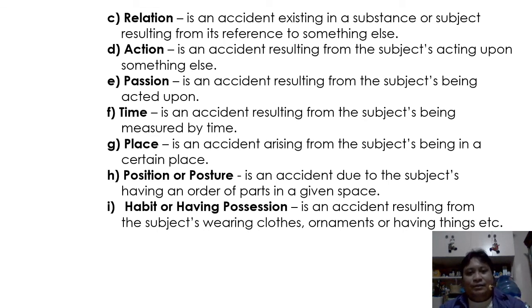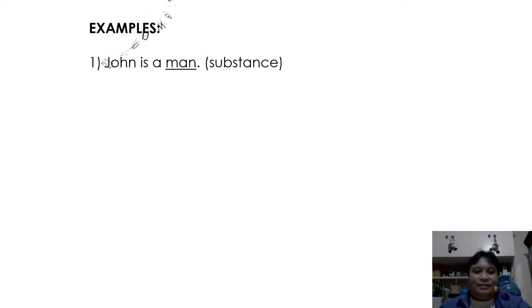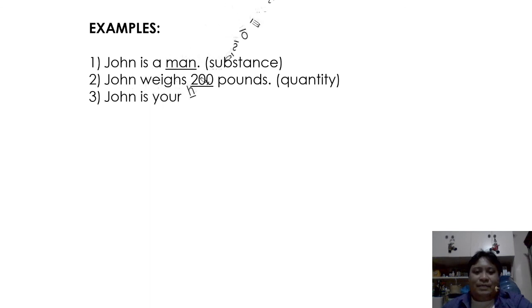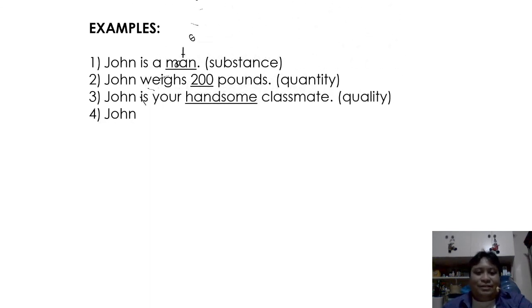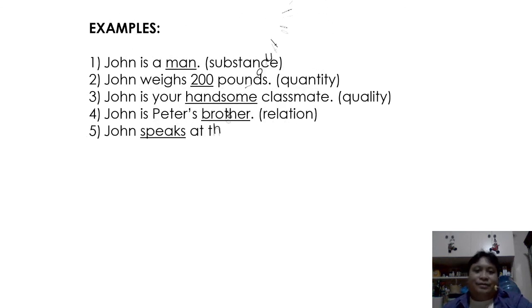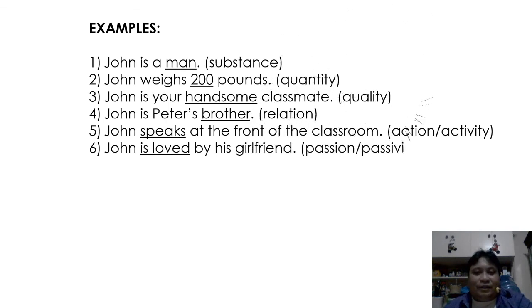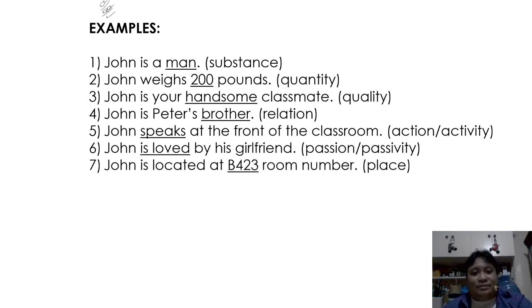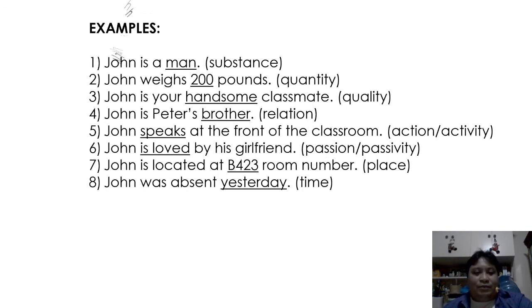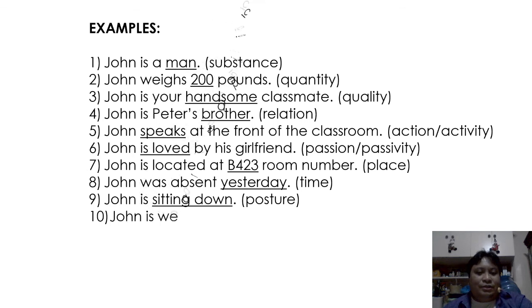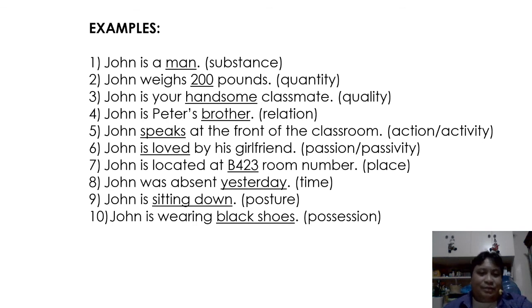Here is an example of the ten predicaments using one person named John. John is a man — substance. John weighs 200 pounds — quantity. John is a handsome classmate — quality. John is Peter's brother — relation. John speaks at the front of the classroom — action or activity. John is loved by his girlfriend — passion. John is located at room B243 — place. John was absent yesterday — time. John is sitting down — posture. John is wearing black shoes — possession.